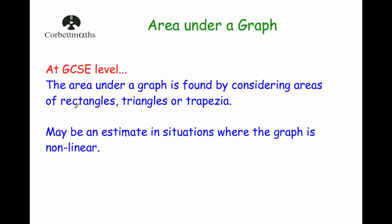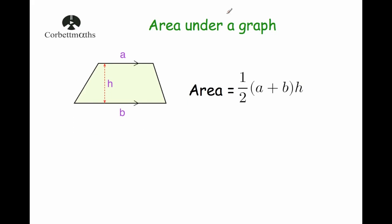We need to know how to find the area for these shapes. Rectangles: length times width. Triangle: half the base times the height. For a trapezium, the area is half of (a + b) — the two parallel sides added together — times the height. In other words, add the two parallel sides, halve it, and multiply by the height.